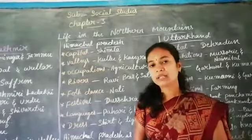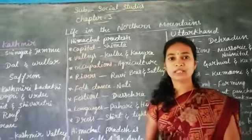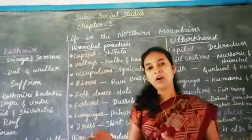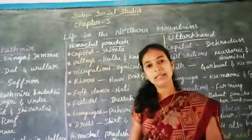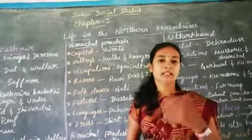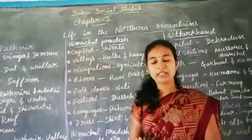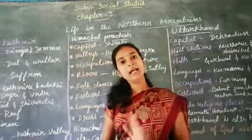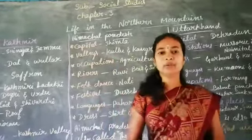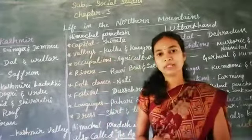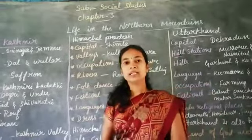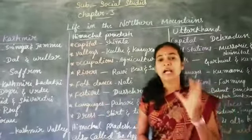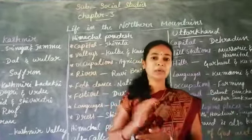Last class we discussed the Northern Mountains. The Northern Mountains have a long range of mountains called the Himalayas. The Himalayas have three mountain ranges: the Himadri, the Himachal, and the Shivalik. You already learnt about that. Today we discuss about life in the Northern Mountains.